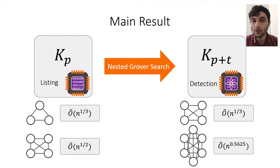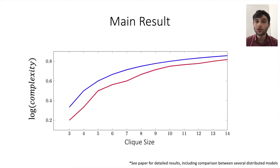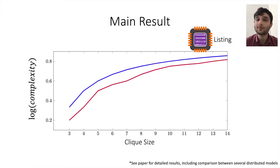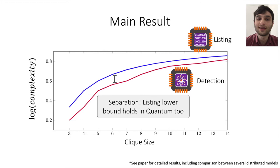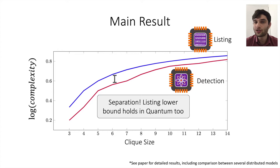As an example, we take an algorithm for listing triangles that takes n to the 1/3 rounds in the non-quantum setting, and we turn it into an algorithm for detecting cliques of size 4 in the same round complexity in the quantum distributed setting. In general, the blue line shows the round complexity required for listing in the non-quantum setting, and the red line shows the runtime that our algorithms take for detection in the quantum setting. This gap is also a separation, since the lower bound for listing is exactly the same in the quantum setting, giving us a separation between listing and detecting cliques that is not known to exist in the non-quantum setting.